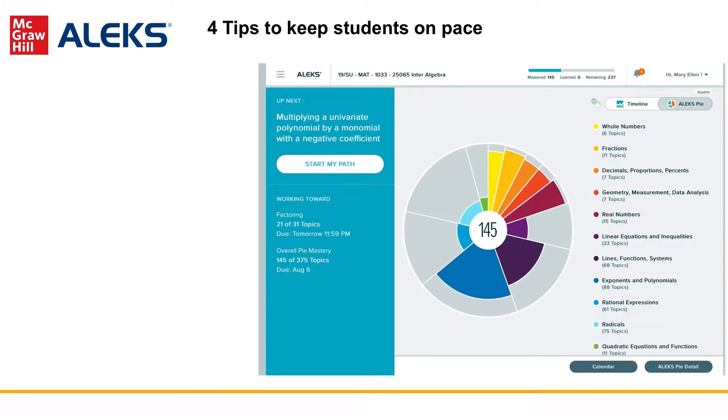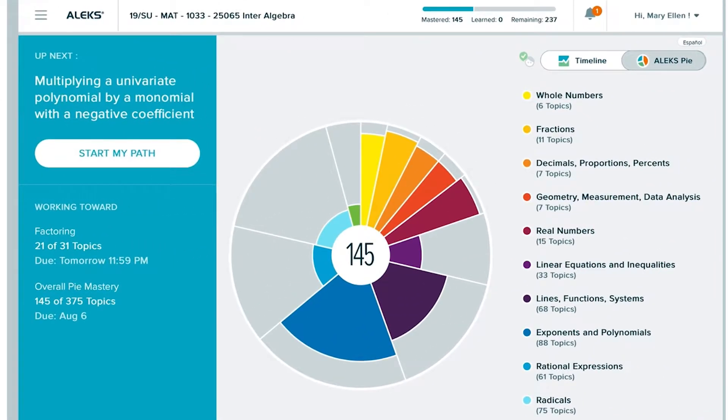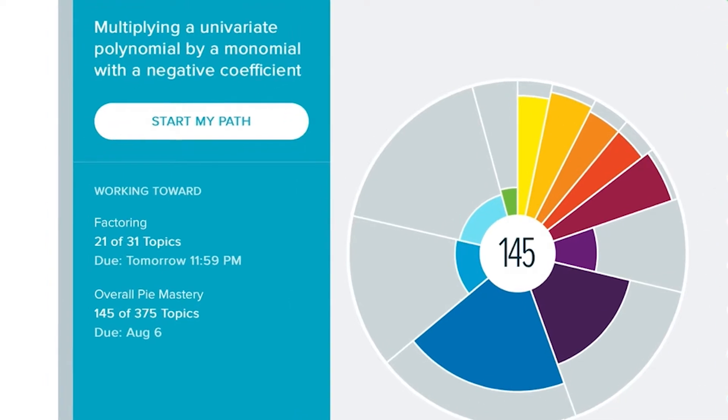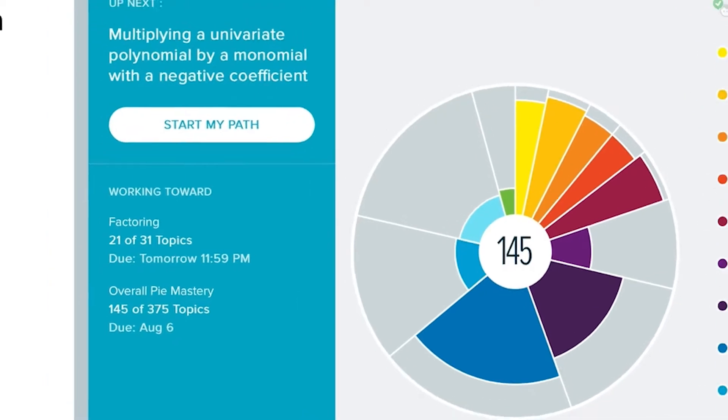Here are four strategies to help students with their pacing and keep them motivated. First, setting a proper pace for your students. Be sure to work with your ALEKS Implementation Manager to ensure that you're assigning an appropriate number of topics for your course.